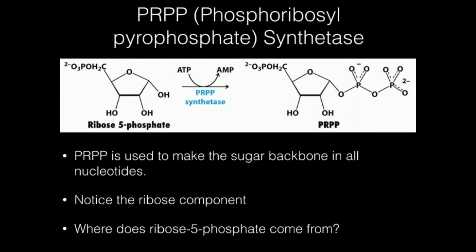This molecule is made from ribose 5-phosphate through an enzyme called PRPP synthetase, whose full name is phosphoribosyl pyrophosphate synthetase. PRPP is going to be used in both purine and pyrimidine synthesis as the starting point for the ribose ring. Eventually, we'll remove the 2-prime OH group to make deoxyribose, but that's done a lot later. So this is going to be the 5-carbon sugar for all nucleotides.